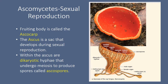For sexual reproduction, the fruiting body of an ascomycete is called an ascocarp — just as the basidiomycete's fruiting body is a basidiocarp. The ascus is the sac that develops during sexual reproduction. Within the ascus are dikaryotic hyphae that undergo meiosis to produce ascospores. These ascospores are produced via meiosis within the ascus.